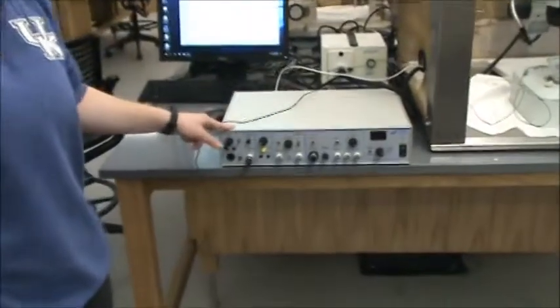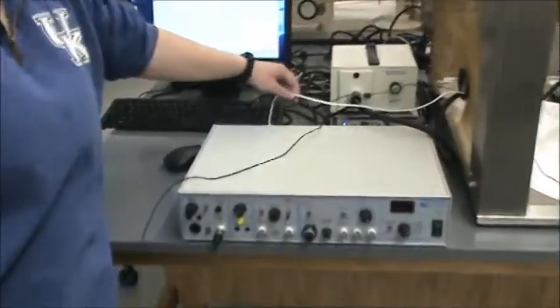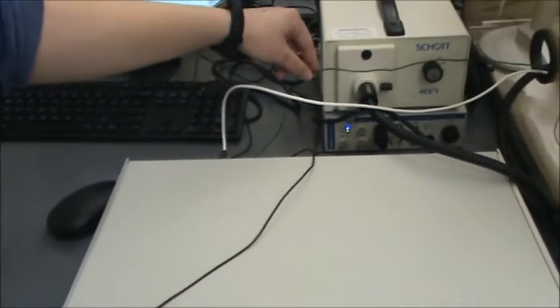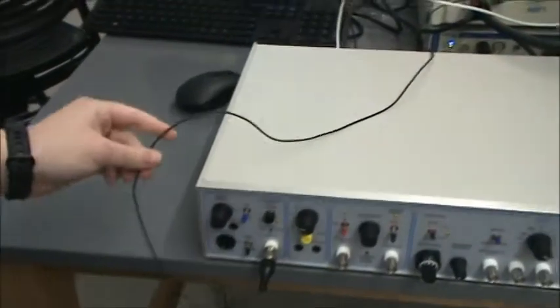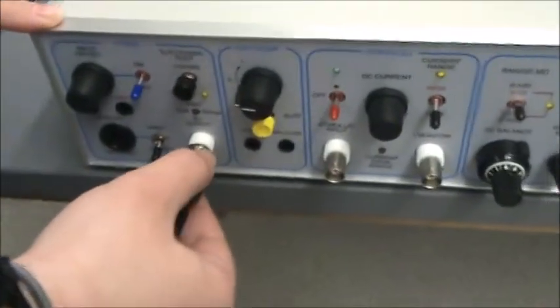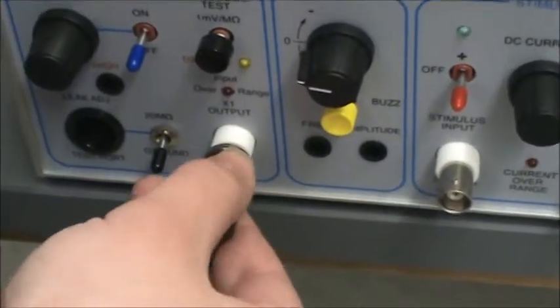So this is your intracellular amplifier. We're going to look at how to set that up. You should have your headstage and your ground wire plugged in in the back. This is connected to your power lab. This is a BNC connector.